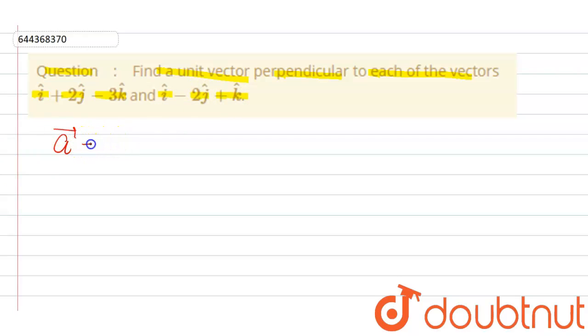Now we assume first vector to be vector a, that is i cap plus 2 j cap minus 3 k cap. And b vector equals i cap minus 2 j cap plus k cap.